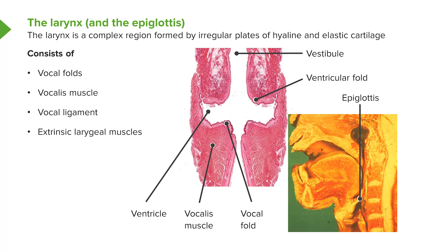This section is through the centre of the larynx of a person looking towards you, so you can see on the right and left hand side of the airway going down through the vestibule are two ventricles. Above each ventricle is a ventricular fold and below is a vocal fold. The ventricular fold is a false vocal cord. The true vocal cord is the vocal fold lying in the most inferior part of that ventricle. The ventricle and the vestibule are very important components because they help to change the sound of our voices.